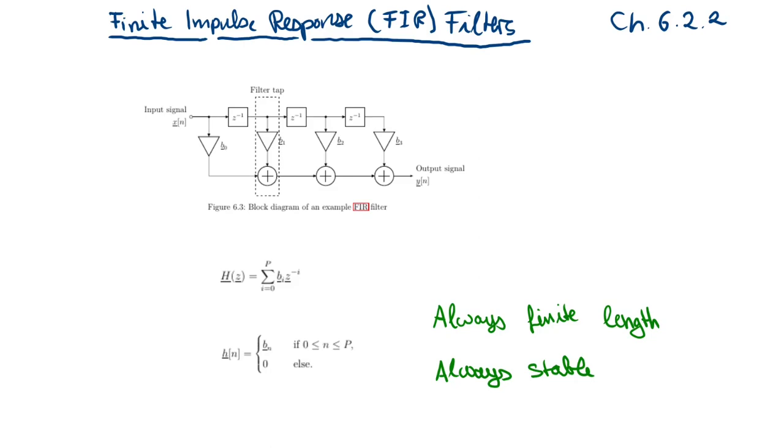The second type is the Finite Impulse Response Filter, or in short FIR filter. The filter structure is depicted here. So you have only a feed forward branch.